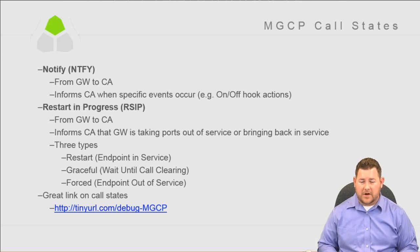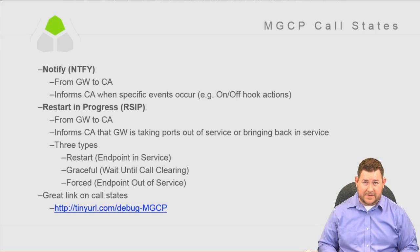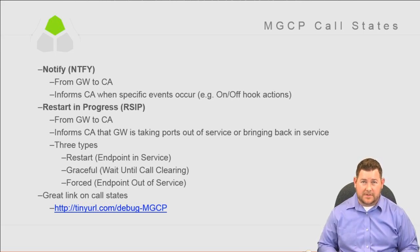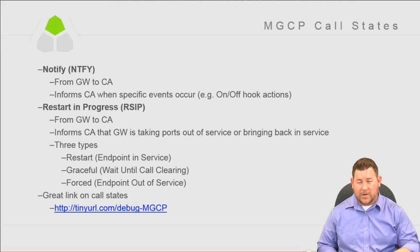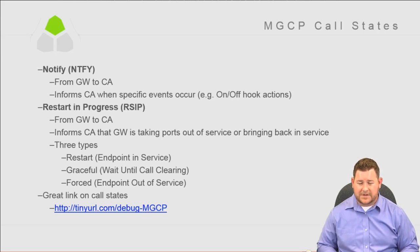Restart In Progress, RSIP, is from the gateway to the call agent. It informs the call agent that the gateway is taking ports out of service and bringing them back in service. There are three types: Restart — endpoint is completely in service; Graceful — waits until the current call is cleared before the reset in progress happens; and Forced — actually takes the endpoint out of service immediately.